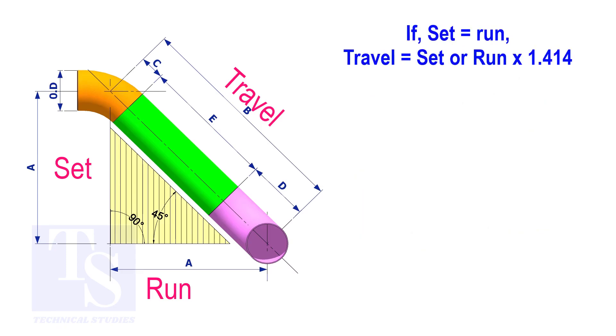Assume that the value of the set is 100. The value of the travel is 100 multiplied by 1.414 equals 141.4.